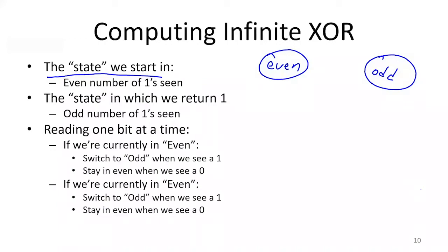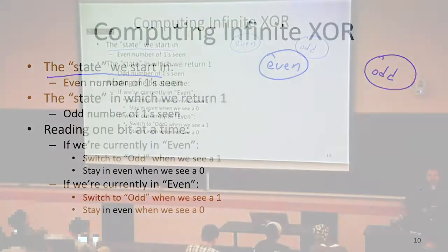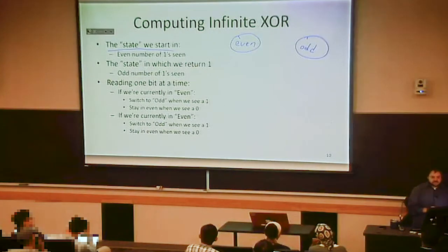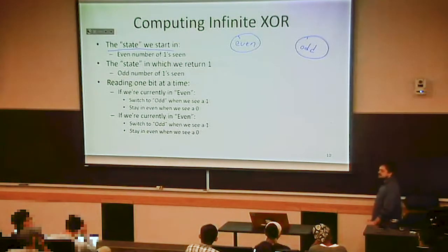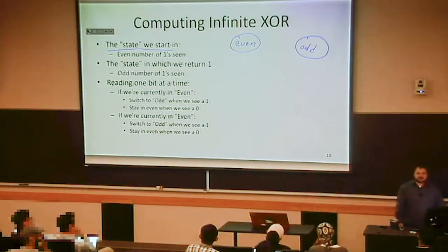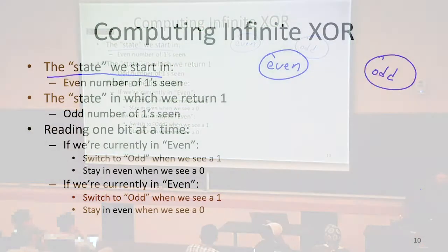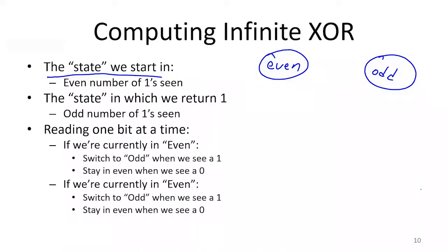Now that we've identified what our states ought to be, let's pick which state we want to start in. Before I have seen any inputs, how many ones have I seen? Zero. And zero is an even number, so the even state is going to be our start state. The way we denote our start state is we put an empty arrow coming into it from nowhere, meaning that before you've done anything else, that's the state you're in.